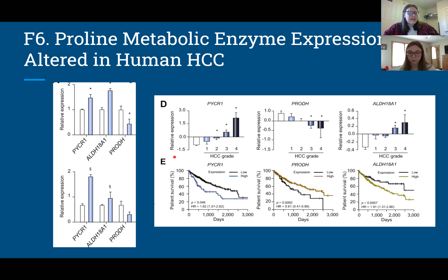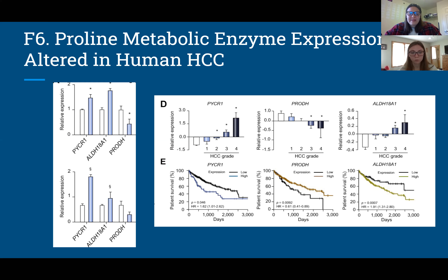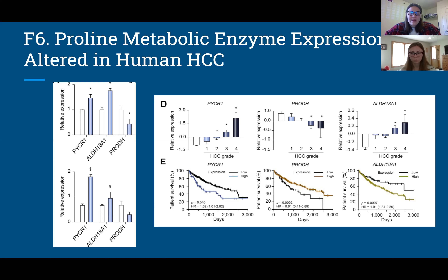Figure 6E shows a patient survival rate analysis. Patients who maintained high levels of PRODH, or low levels of ALDH18A1 or PYCR1 expression, had significantly better survival rates. This is evidence that changes in proline metabolic enzymes confer functional advantages to tumors — better for tumors, worse for the patient — and suggests that expression levels may serve as an independent indicator of disease severity and clinical outcome.